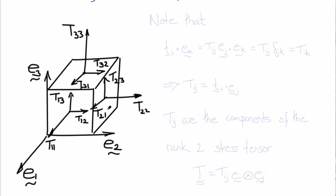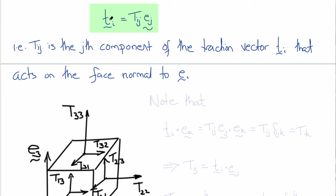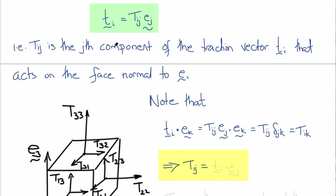Going back to our expression where we defined these stress components, taking the dot product with E_K gives T_I · E_K = T_IJ E_J · E_K. Since E_J · E_K equals delta_JK — 1 when J equals K and 0 otherwise — that turns the J into a K, giving T_IK. So we can write T_IJ as equal to T_I · E_J. These are equivalent definitions of the components of the stress tensor in Cartesian coordinates.